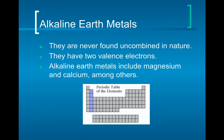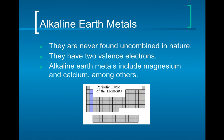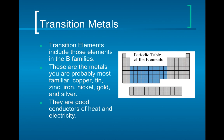Alkaline earth metals are never found uncombined in nature — they all have two valence electrons. They include magnesium and calcium; calcium is in our bones. Transition metals include gold, silver, iron, nickel, and zinc — we won't focus on them much in this class, but they are great conductors of heat and electricity.